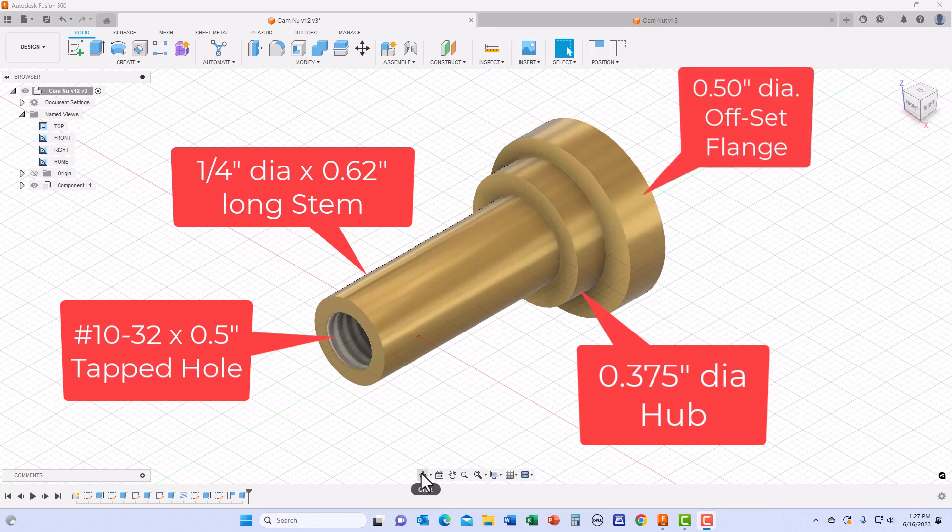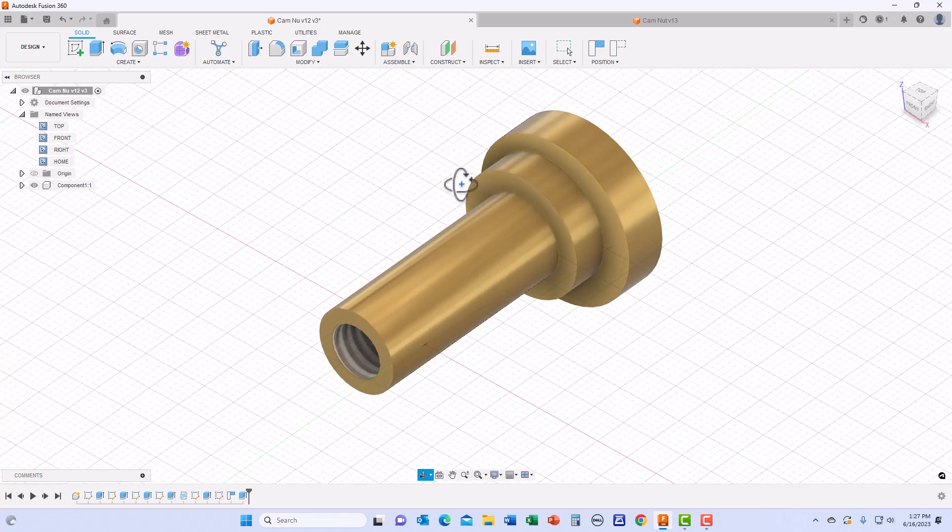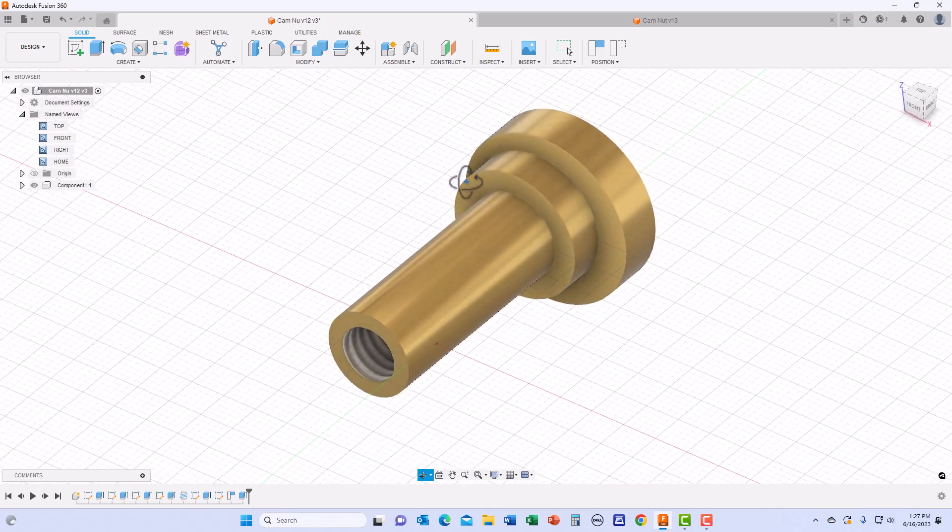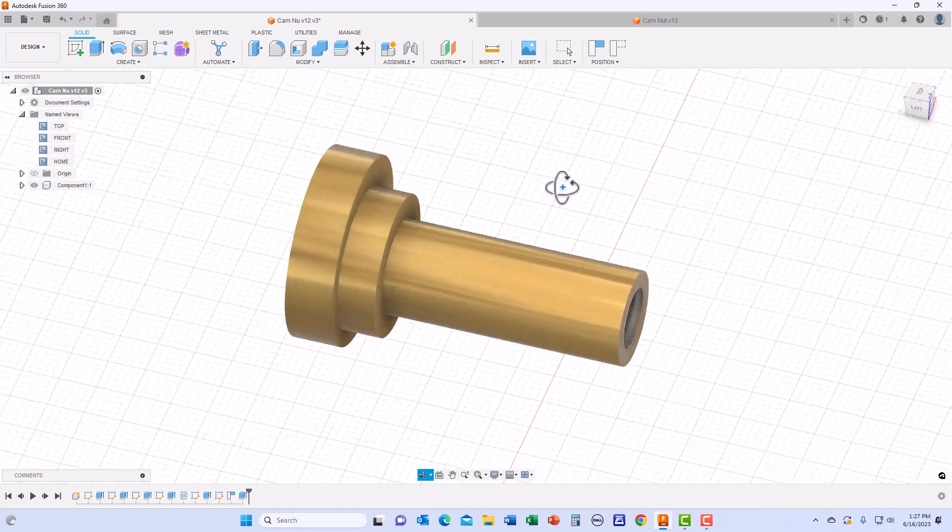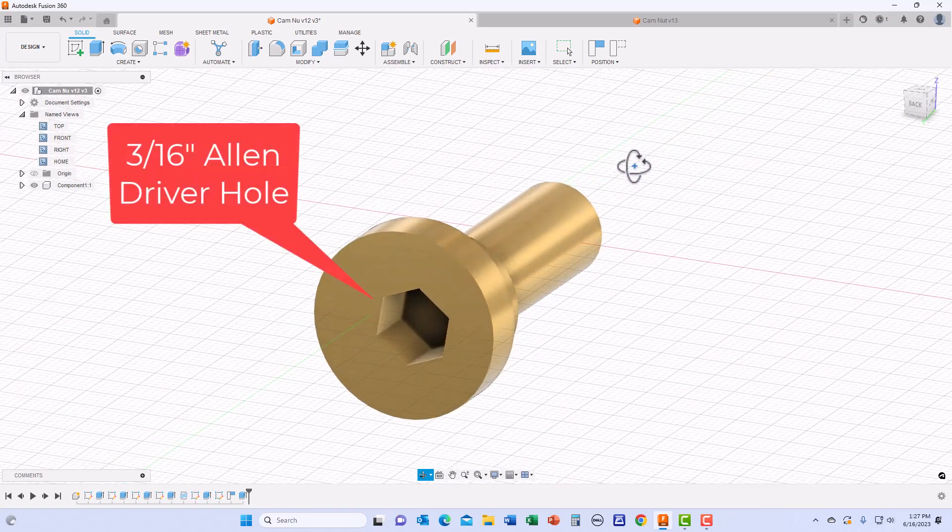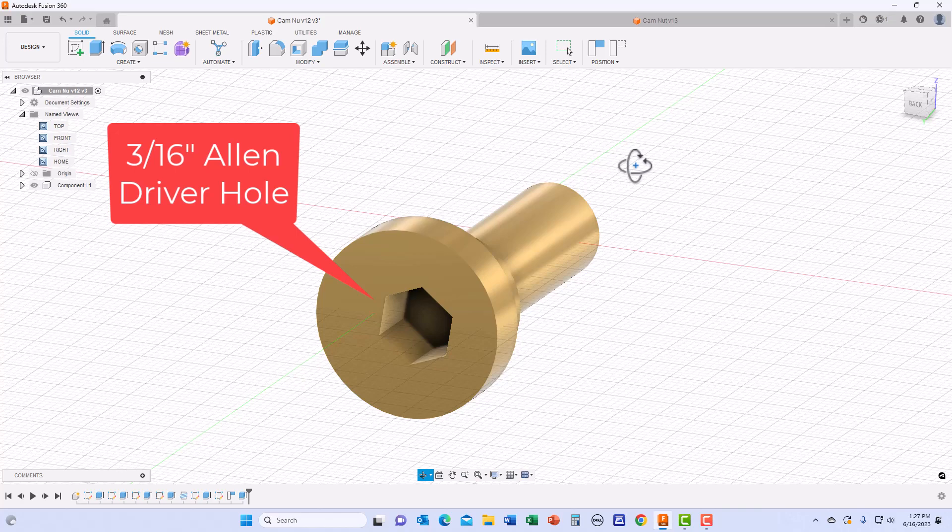The opposite or right side of the cam nut consists of a 1½ inch diameter offset flange. This offset flange is offset from the center of the stem by 0.025 inches. A 3/16 inch wide by 0.15 inch deep hex hole designed for a 3/16 inch Allen wrench will be machined into the face of this flange.